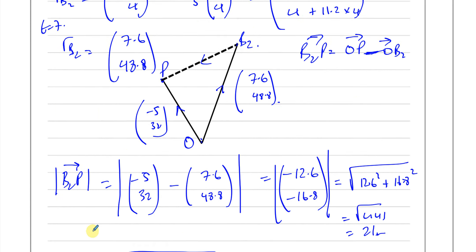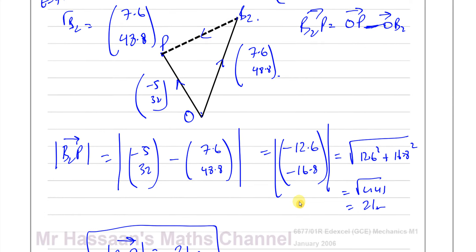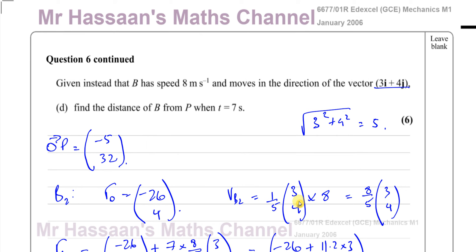That's the answer to part D. The distance is the magnitude of the displacement vector. That completes question number 6. If I get requests for other questions from this paper, I'll put them in a playlist. Below that you'll find a playlist of all my M1 vectors questions. You can subscribe by clicking the link at the top of the page, and in the description box you'll find links to other papers from Edexcel, international A-level, and IGCSE. Thank you for watching and see you next time.